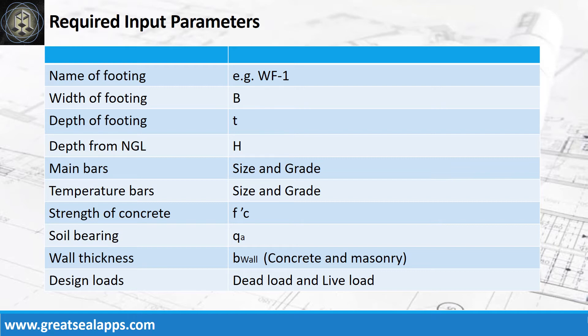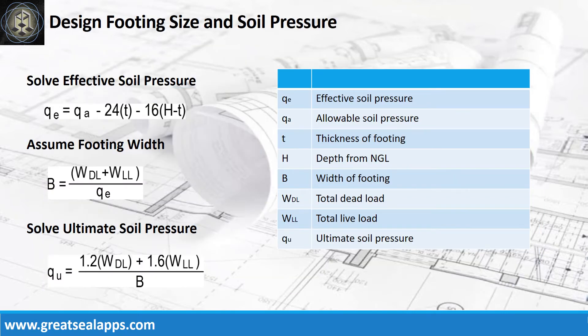Additional input parameters include main bars with size and grade, temperature bars with size and grade, strength of concrete, soil bearing capacity, wall thickness — either concrete or masonry — and design loads. Then solve the effective soil pressure from the footing depth and depth from the natural grade line.